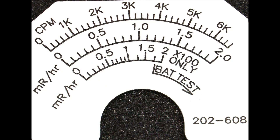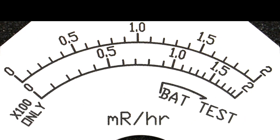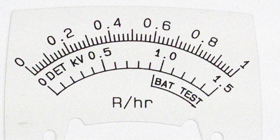First, we want to explain how to read the subdivisions, commonly called tick marks, on the meter scale. The majority of meter faces have primary and secondary tick marks, while some meter faces also have tertiary or third order tick marks.